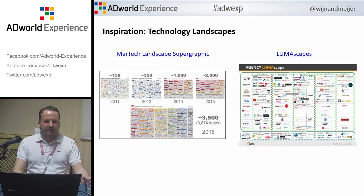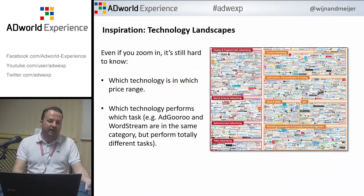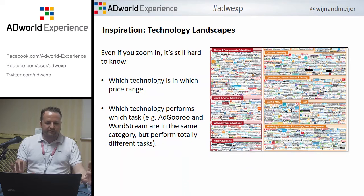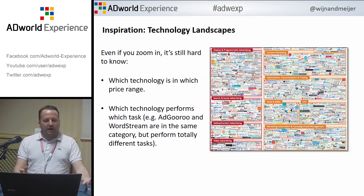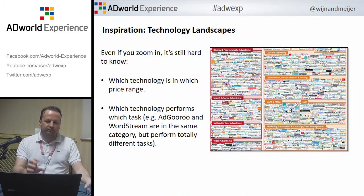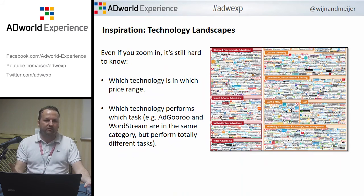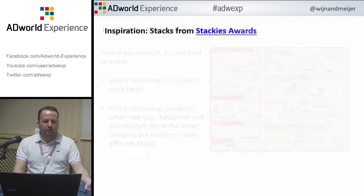When we zoom in and try to find specific tools — and I know you can't even read this one, but you could zoom in even deeper — if you're really looking for a certain tool or software, this doesn't directly help you, because it has quite broad categories. For example, AdGuru and WordStream are in the same category. They're both paid search tools, but they don't perform the same tasks — they do very different things. So this is not really helpful; it's a starting point, but it's more like to overwhelm people.